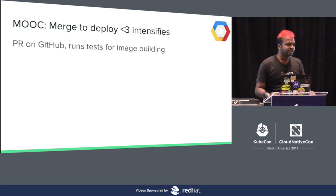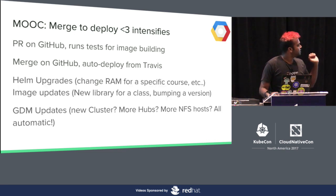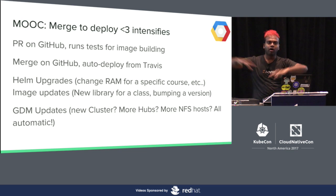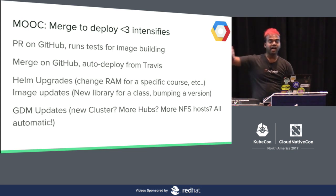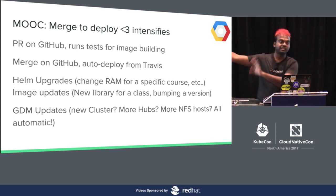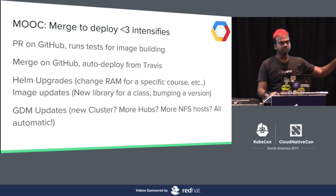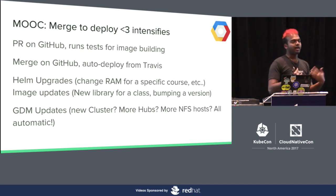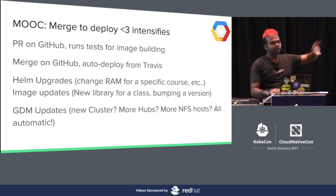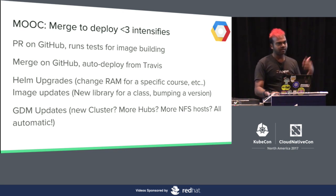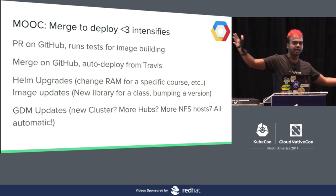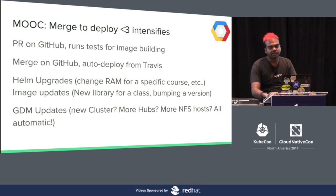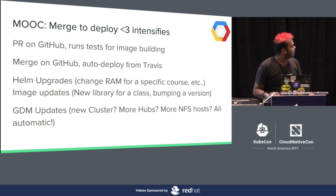For the MOOC we are doing something very similar, except instead of just Helm upgrades we're also doing full Google Deployment Manager updates. If you want a new cluster because you're running out of capacity, or an entirely new hub with a different configuration because you're teaching a separate class, you just change the YAML file, merge on GitHub, and it will automatically deploy. This is really nice because we have to expand and contract — we're not going to provision for 100,000 users and wait. We'll provision for 20,000 and keep bumping up until we get to where we want to go. We were able to spread out responsibilities for deployment, and that helped a lot for morale for everyone.